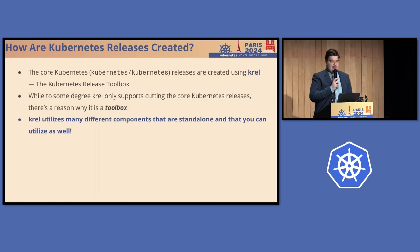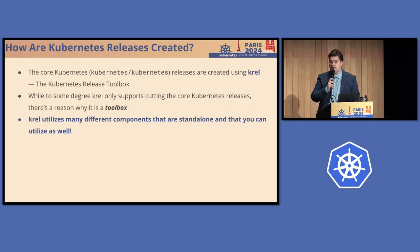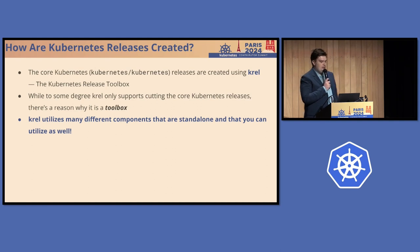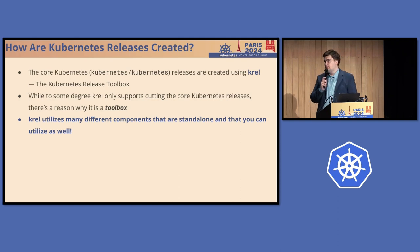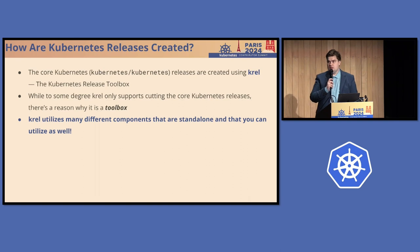You might ask from the beginning: how are Kubernetes releases created? What do we do exactly there? The core Kubernetes releases — speaking of kubernetes/kubernetes — are created using Krell, which stands for the Kubernetes Release Toolbox. To some degree, Krell only supports cutting the core Kubernetes releases, but there's a reason why it's a toolbox: Krell utilizes many different components that are, to some degree, standalone and that you can also use in your projects. We are going to see how to do that today.